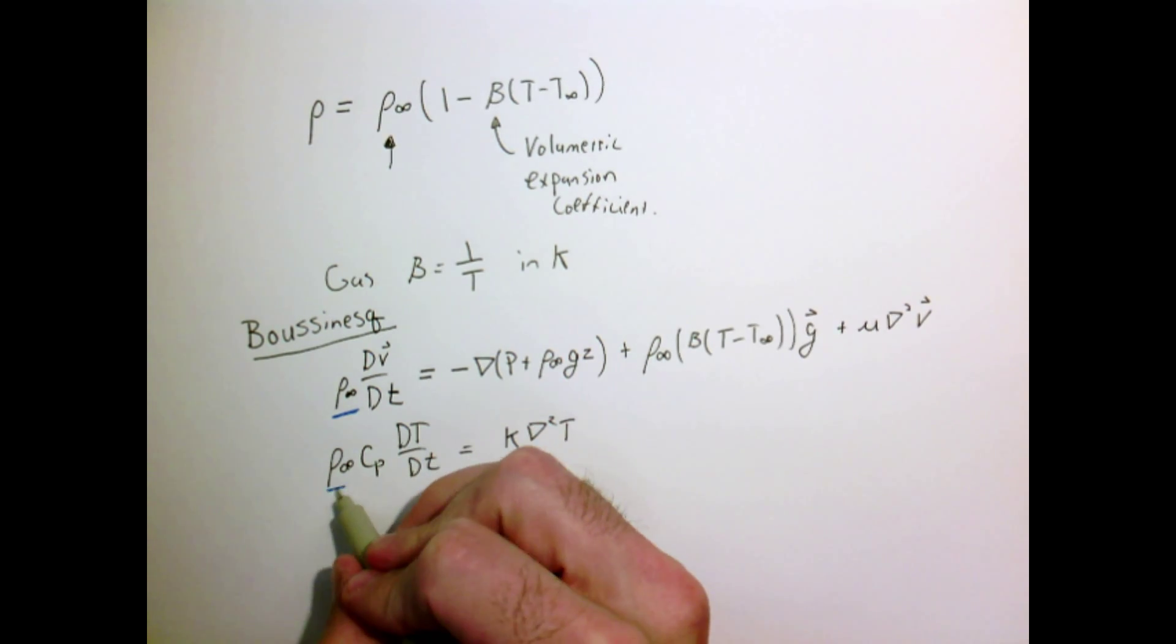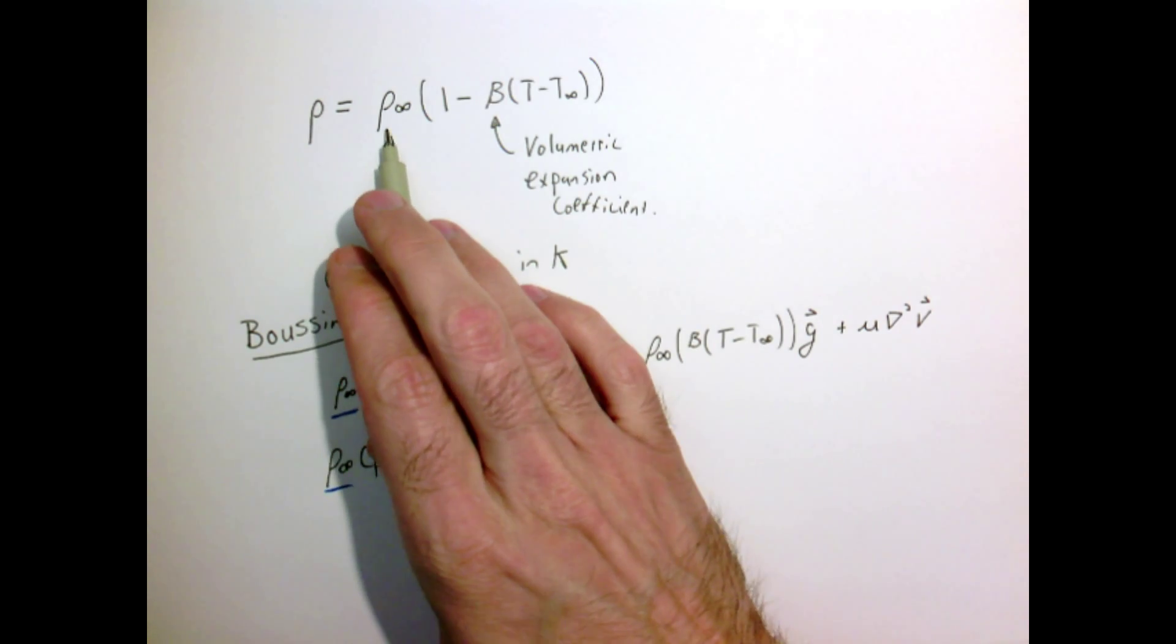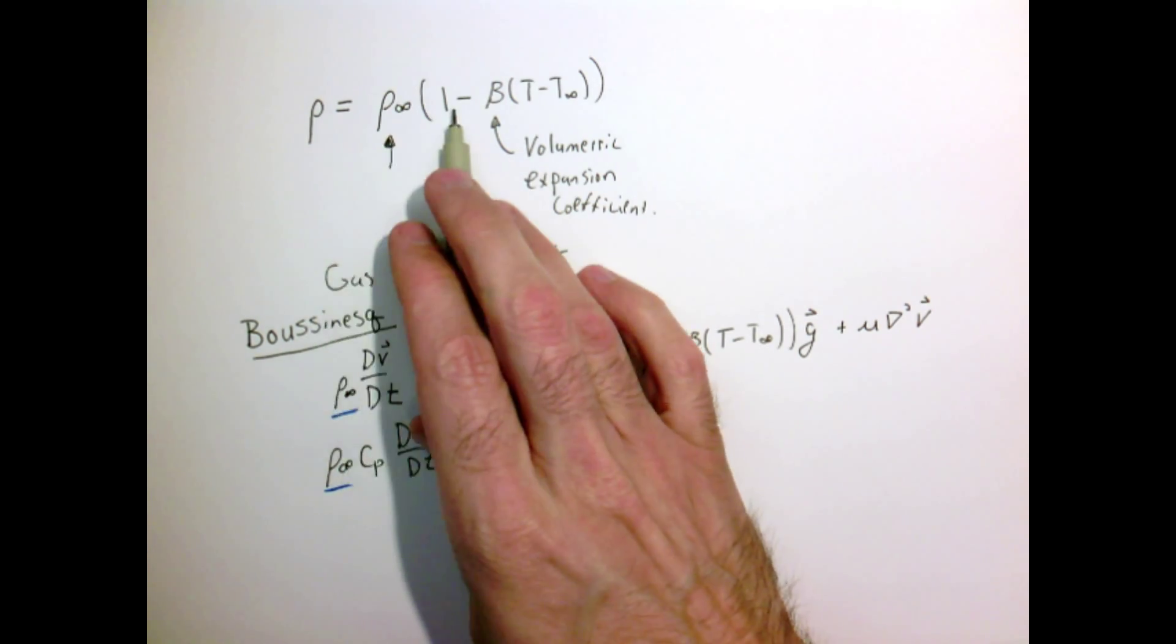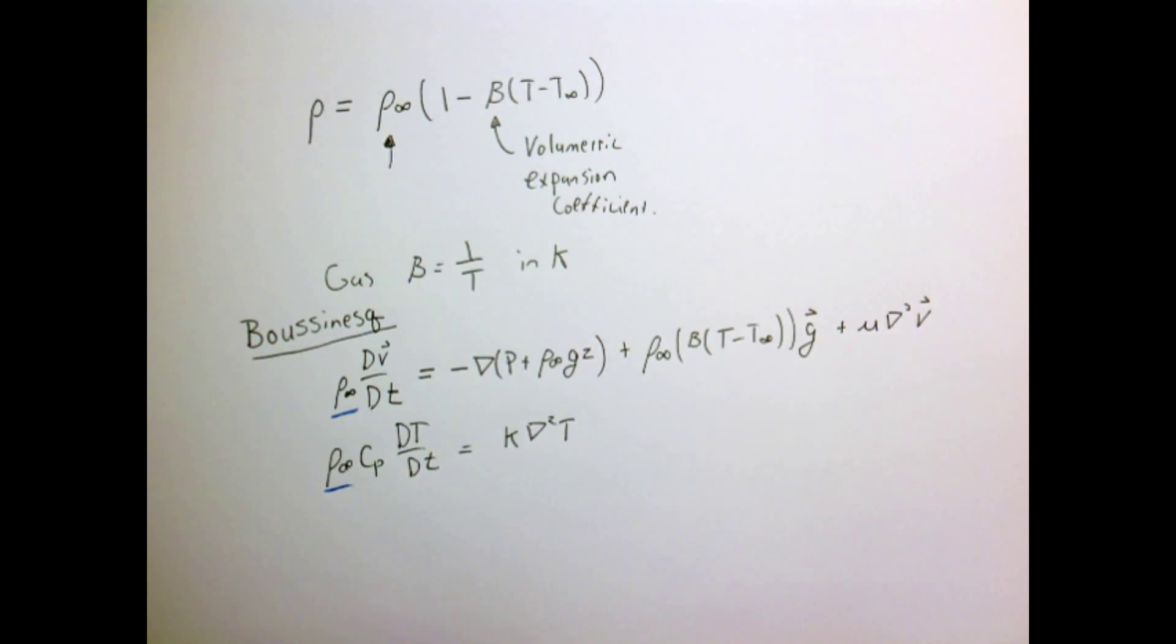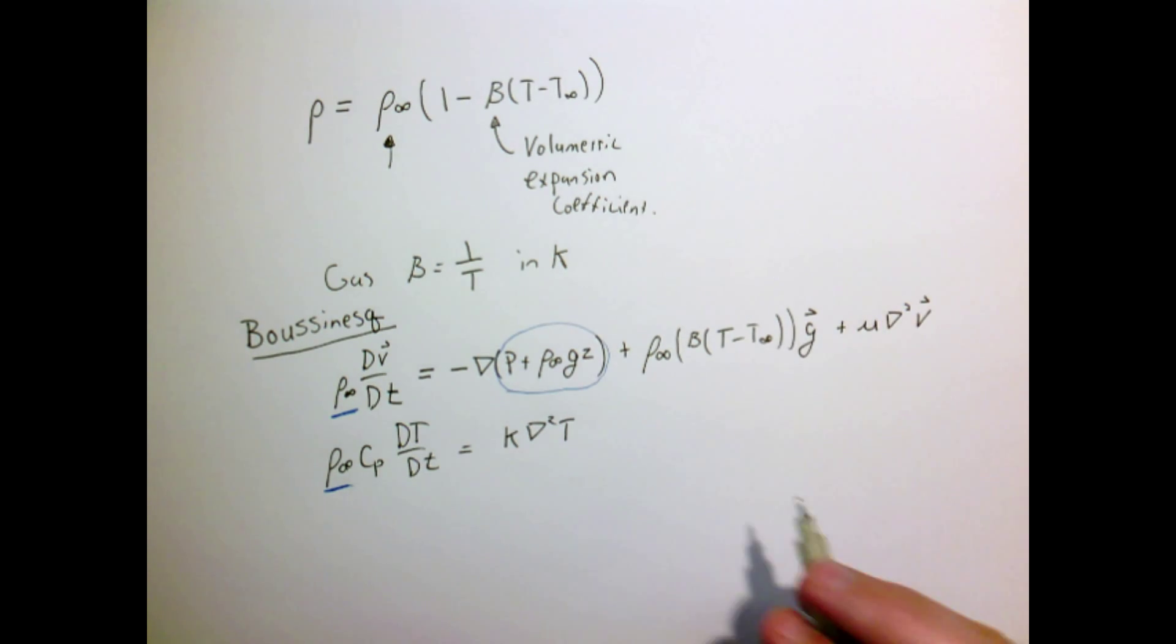The Boussinesq approximation does the following: it simply uses the density which multiplies our time derivatives of velocity and temperature—it just uses the nominal value ρ∞. It then takes the constant density ρ∞ times 1, which comes in our density function, and lumps that with the pressure, the hydrostatic piece, and pulls that apart.